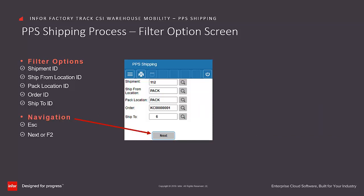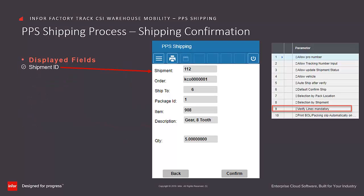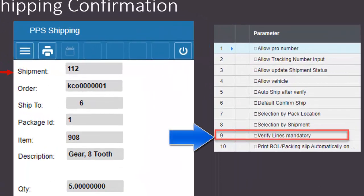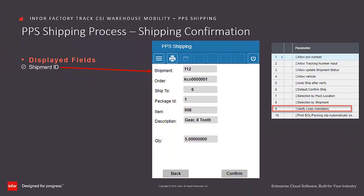Click on Next to continue. Once the shipment is selected, FactoryTrack displays the shipping confirmation for each line if the Verify Lines mandatory option is selected on the transaction set maintenance form. Each confirmation detail includes the following information associated with the items that were previously packed.